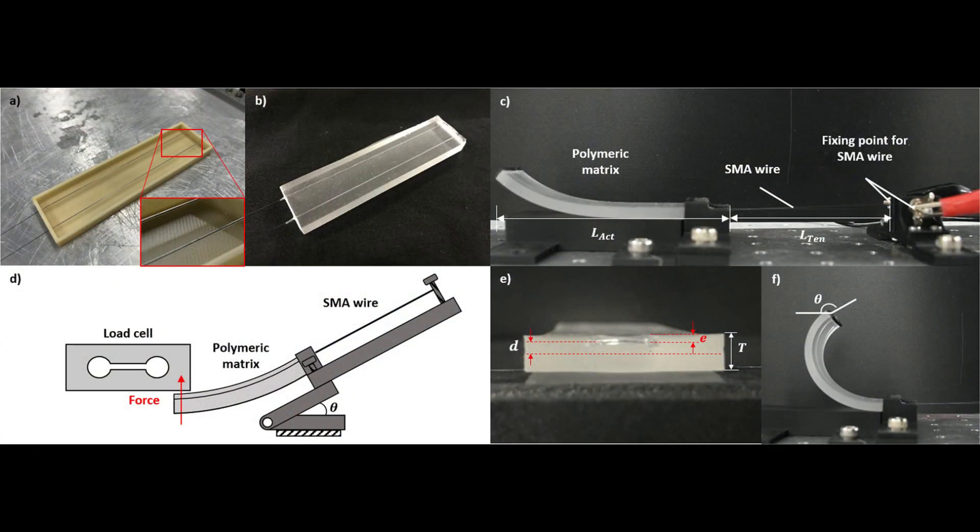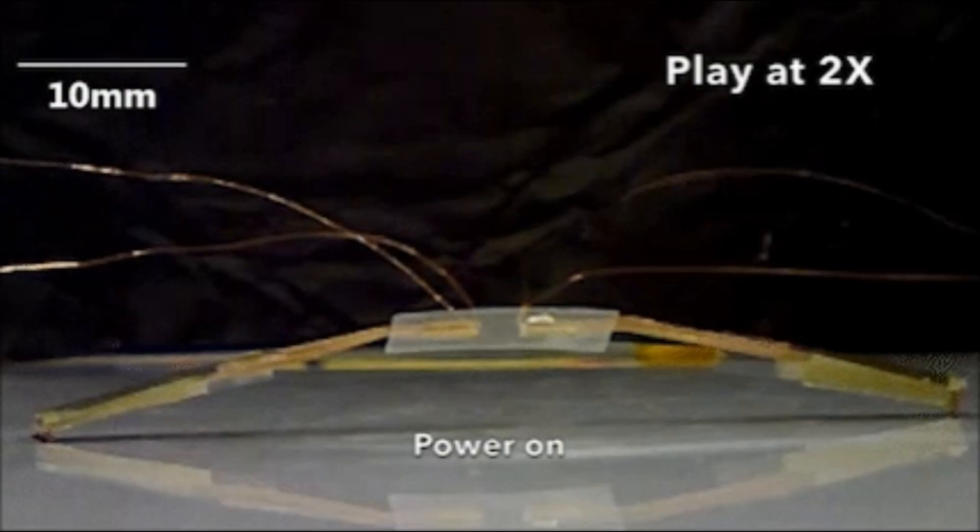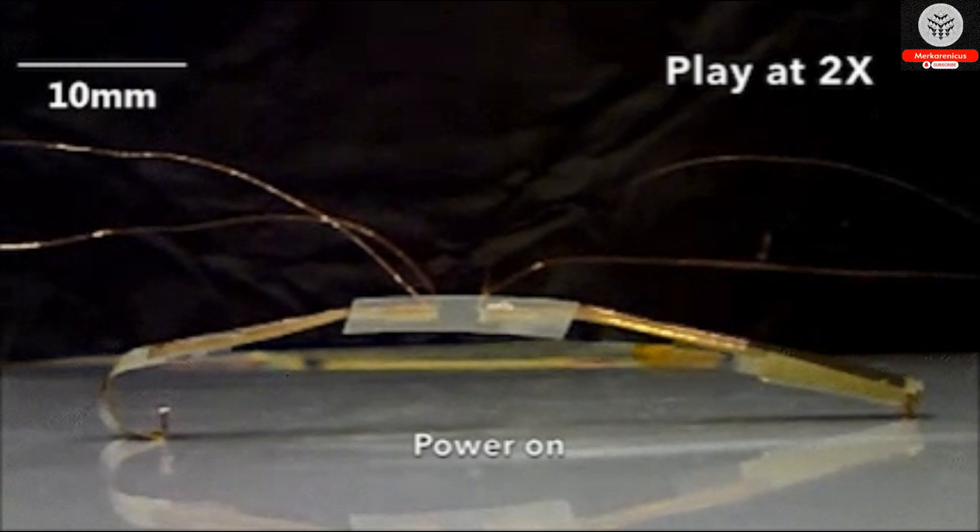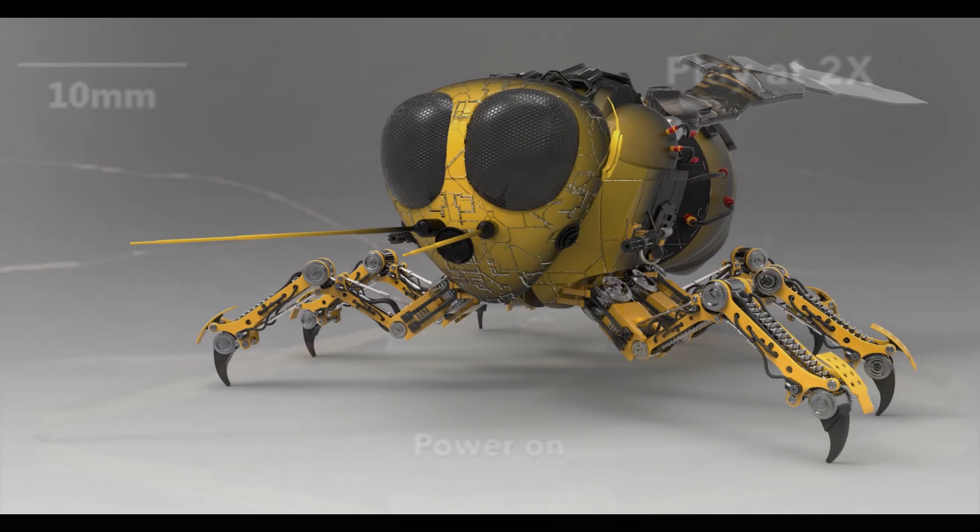Typically, shape memory alloys are not suitable for extensive robotic motion due to their sluggishness. Nevertheless, the WSU robots employ actuators composed of two minuscule shape memory alloy wires, measuring just one one thousandth of an inch in diameter.